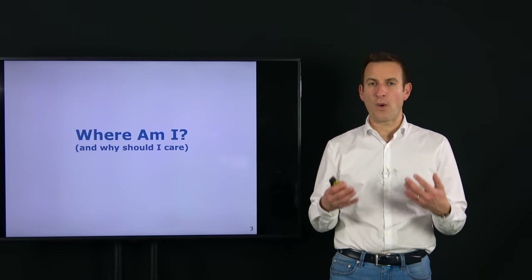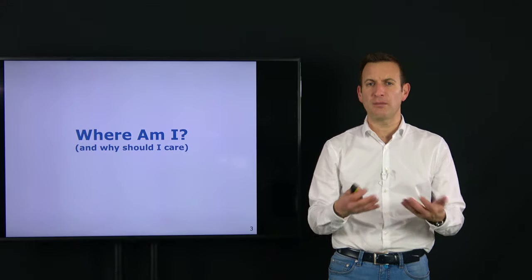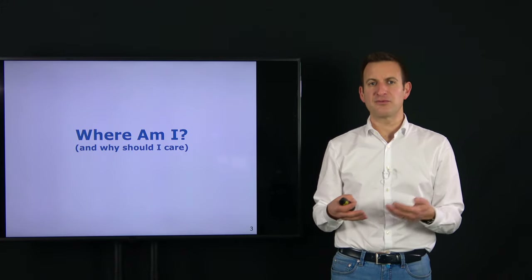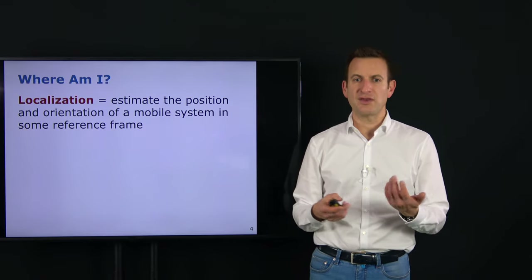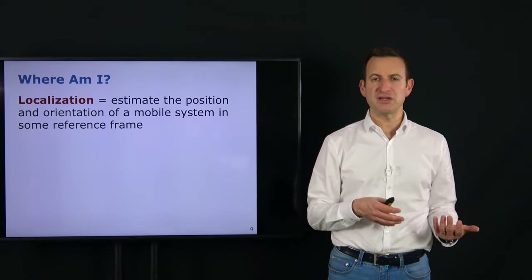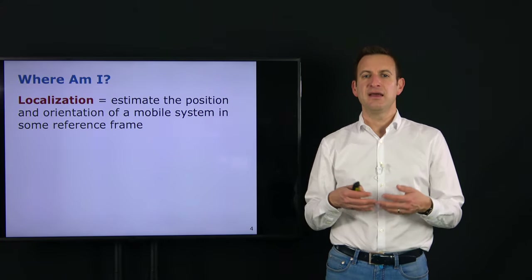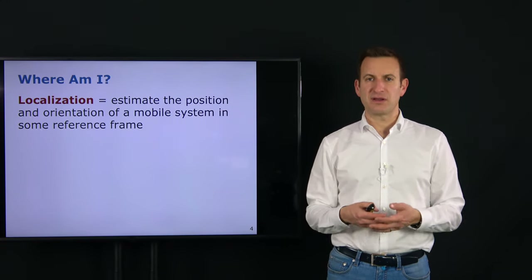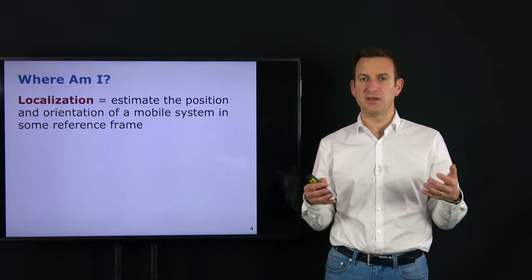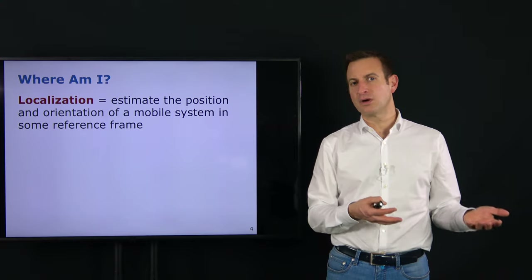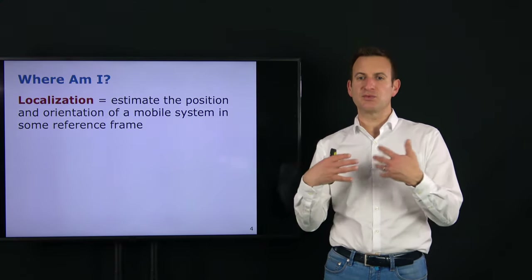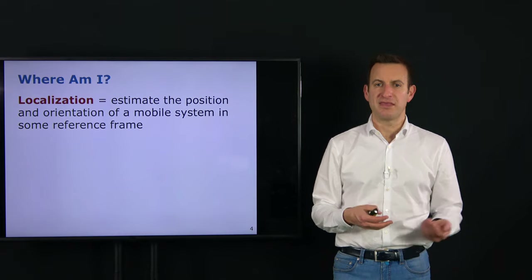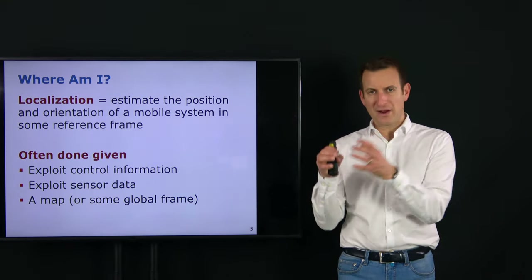Localization tries to answer the question of where am I, and often also where am I looking or pointing, meaning which orientation I'm in, in order to provide relevant information for other downstream tasks. So the question is: we want to estimate our position and our orientation, sometimes called heading, of a mobile system in some external or given reference frame. That typically means there is a reference frame given — it could be a GPS reference frame, but could also be a local reference frame for a building or a map.